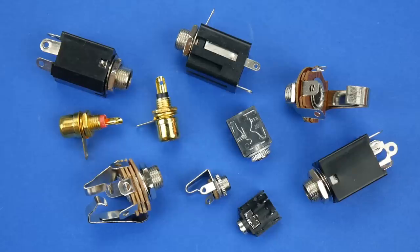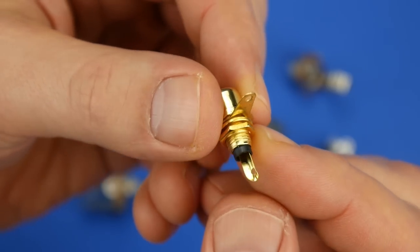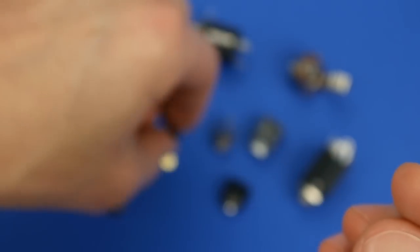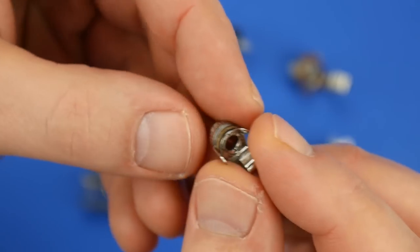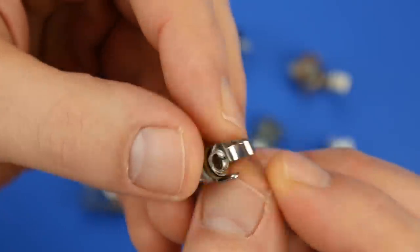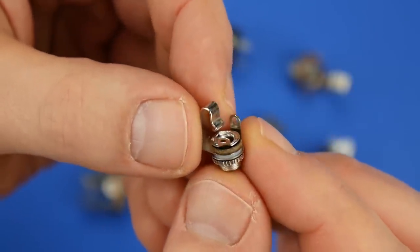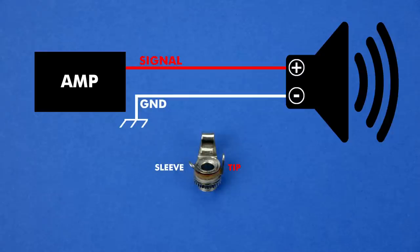There are different types of output jacks. You can use this RCA jack for example if you want to connect it to your stereo. Or maybe this small mono jack. That works the same. It has two connection points for tip and sleeve. Simply use the two cables that were attached to the speaker and connect them to the jack. That's the easiest way. But you can't use the speaker anymore.